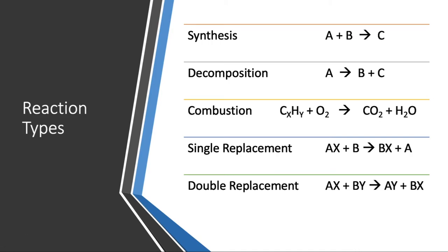One of the things I hope you realize is that you can use logic to distinguish between different types of reactions just based on the reactants. For example, if you only have one reactant, that has to be a decomposition reaction. If you have a reaction with two elements, the only option is synthesis. When you start to involve a compound — like a single replacement reaction where you have a compound and an element — single replacement is a likely candidate, but it could also be synthesis. With more complex reactions you have to do more deducing.